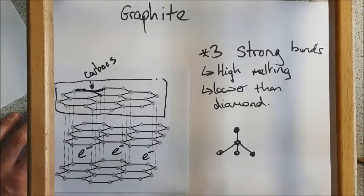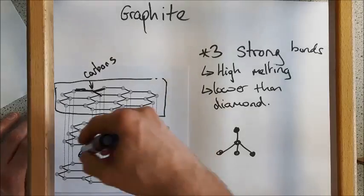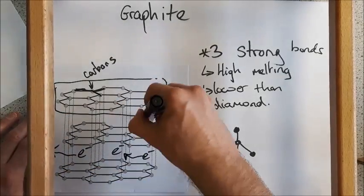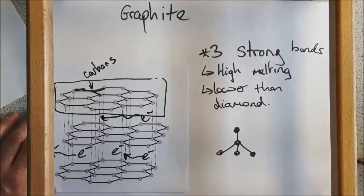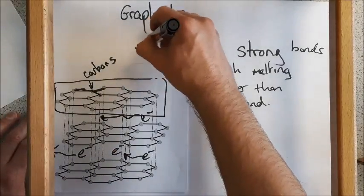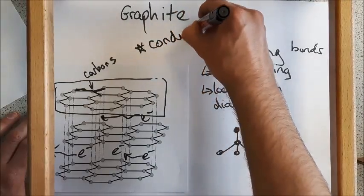Diamond doesn't have this, so diamond doesn't conduct electricity. Whereas graphite, these electrons are free to move around in between the layers. And that is what gives graphite its ability to conduct electricity and heat.